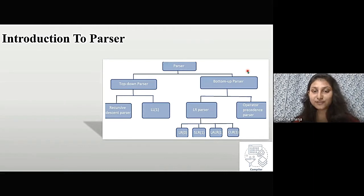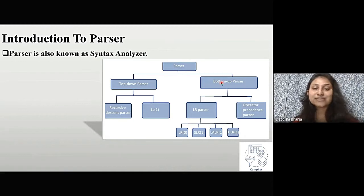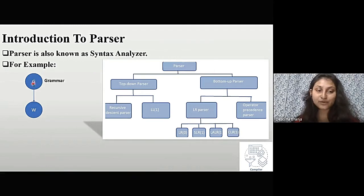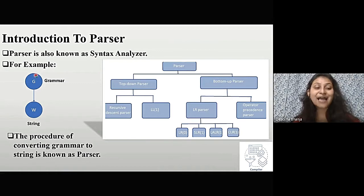There are two types of divisions of the parser: one is top-down parser and another is bottom-up parser. A parser is also known as a syntax analyzer. For example, G states the grammar and W is a string. The procedure of converting grammar to a string is known as parsing. So a grammar is given to us, and the process of converting it to a string is known as a parser.